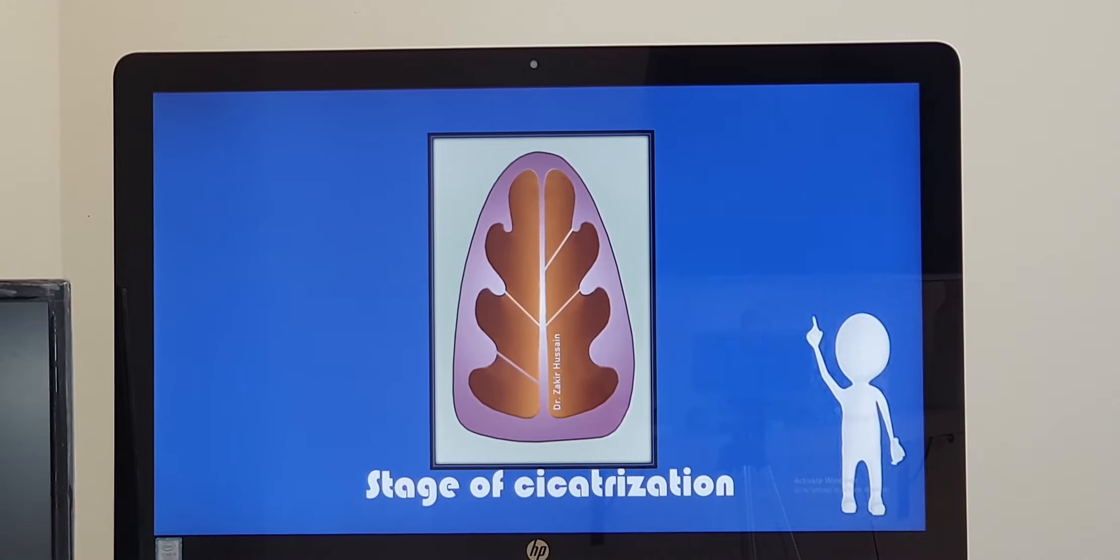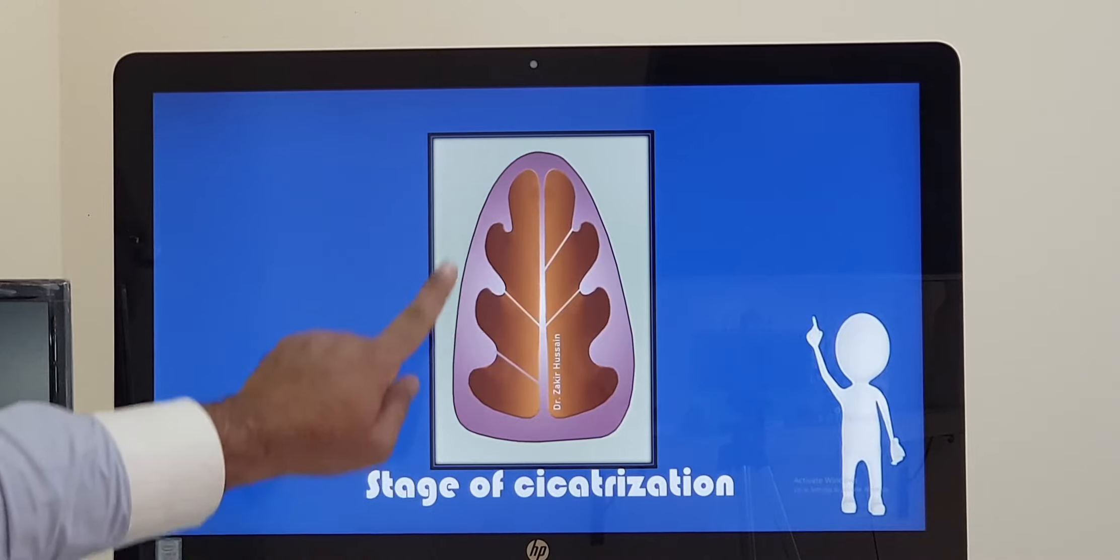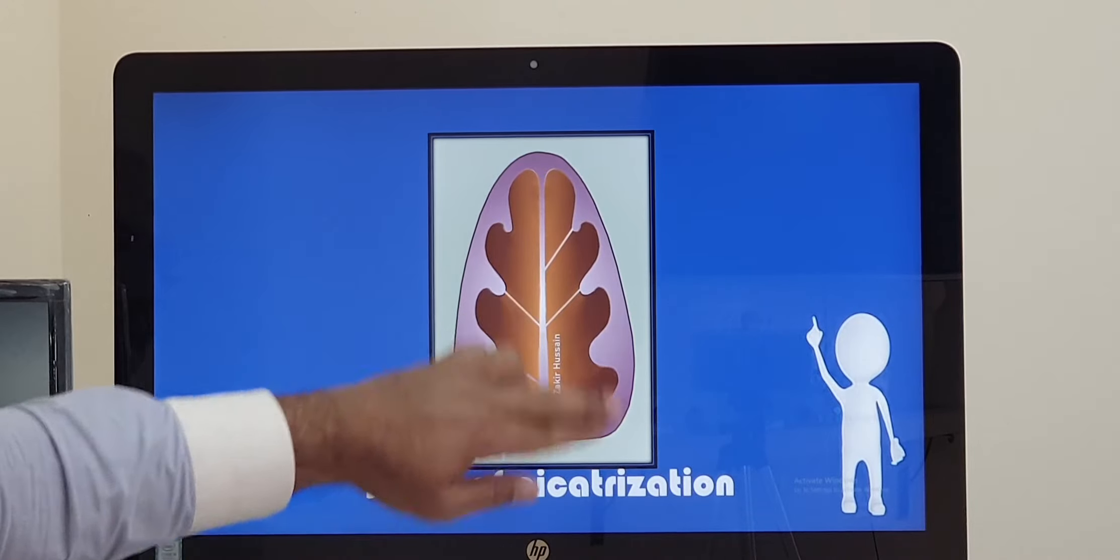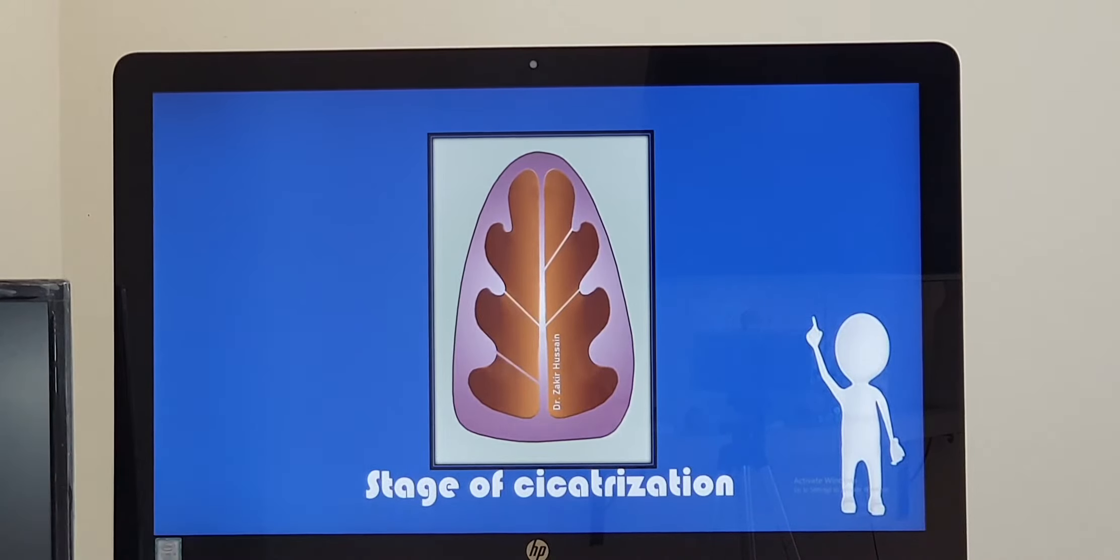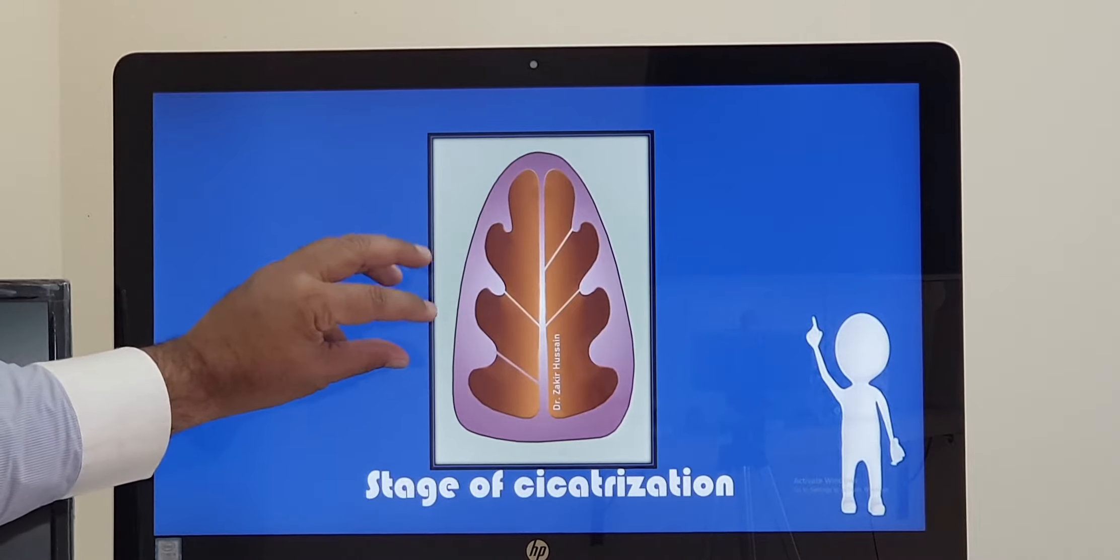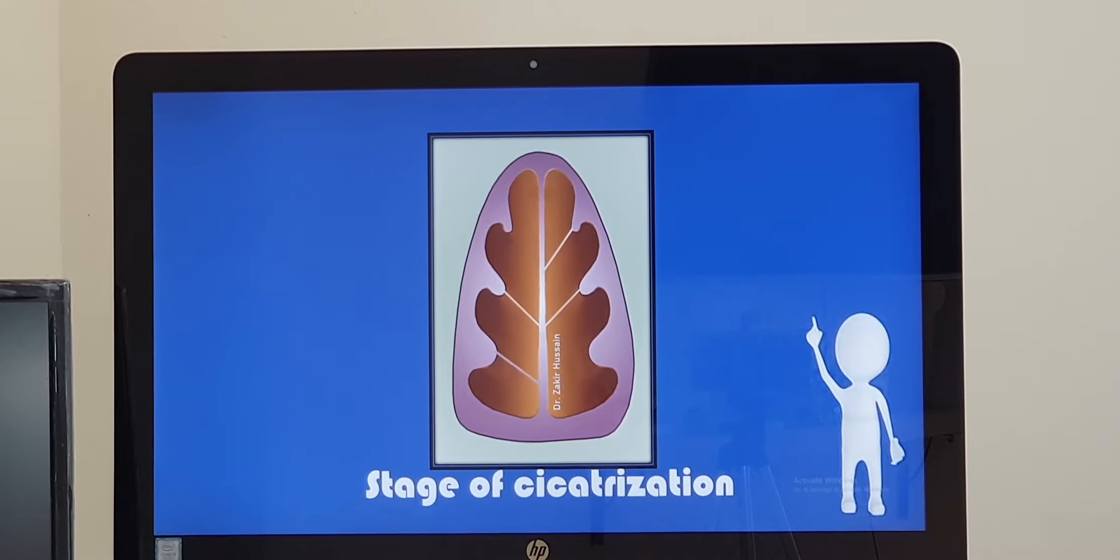And the last one, stage of cicatrization, where there will be fibrosis of the nasal cavity, where the lateral wall it fuses with the other structures nearby, even in the medial wall. So then the whole nasal cavity becomes smaller in size. And outside also, the whole face becomes changed. Four stages we have seen.